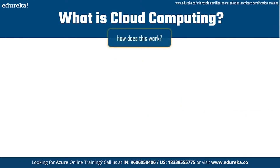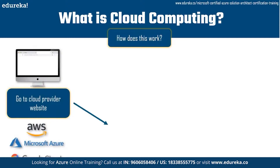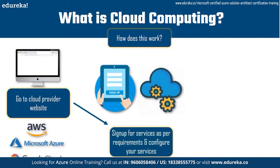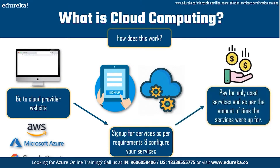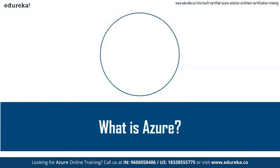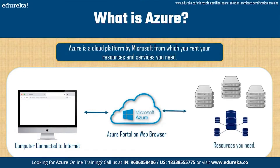John goes to the cloud provider of his choice — Amazon Web Services, Microsoft Azure, or Google Cloud are the top ones — signs up for an account, signs up for services as per his requirements, and configures the resources he needs. The amazing thing is that he only pays for the services he uses and for the amount of time those services were running. Azure is a cloud platform provided by Microsoft from which you can rent resources and services.